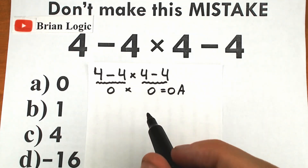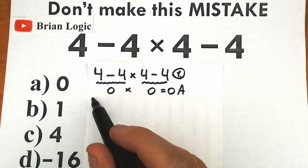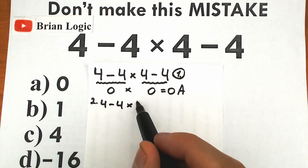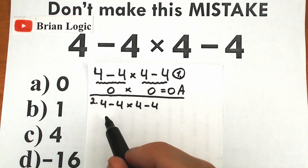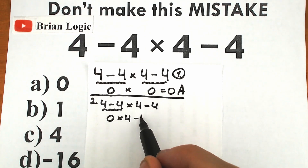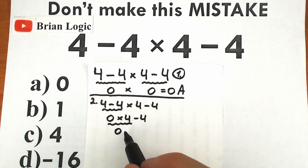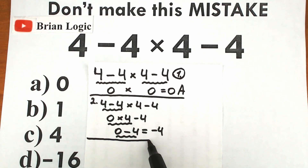Another group of students solves it like this — the second interpretation. Going from left to right: 4 minus 4 equals 0, then 0 times 4 gives 0, and then 0 minus 4 gives minus 4. But as you can see, we don't have that option among the choices, so this is a wrong interpretation.